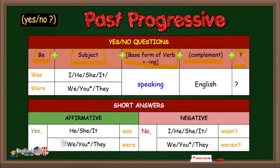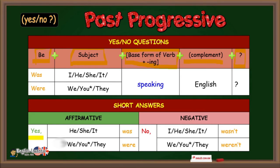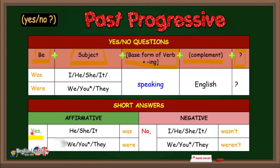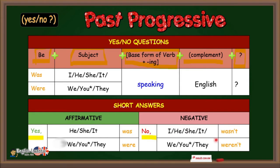Short answers are affirmative: Yes, he was. Yes, she was. Yes, we were. Yes, they were. In the negative form: No, he wasn't. No, she wasn't. No, we weren't. No, they weren't.